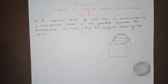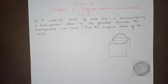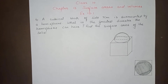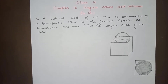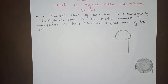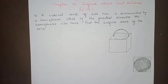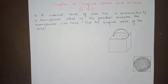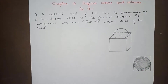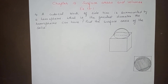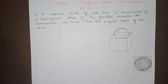Hello everyone, today we will do class 10th chapter 13th surface areas and volumes exercise 13.1 question number 4. A cubical block of side 7 cm is surmounted by a hemisphere. What is the greatest diameter the hemisphere can have? Find the surface area of the solid.